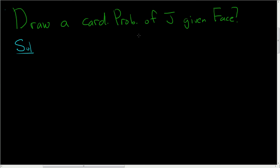Solution. So let's write down what we have. We want the probability of a jack card, given that - so whenever you see given, you draw this line here - given that we know it's a face card.